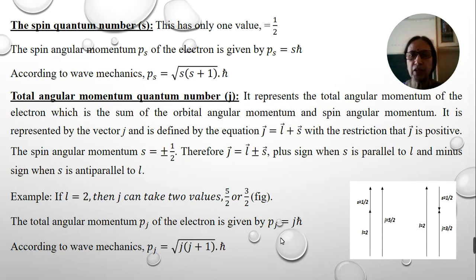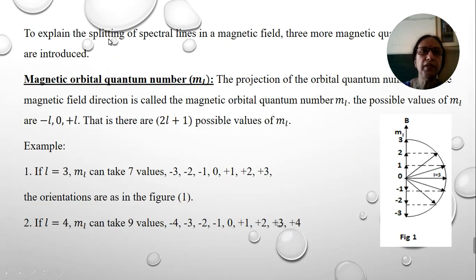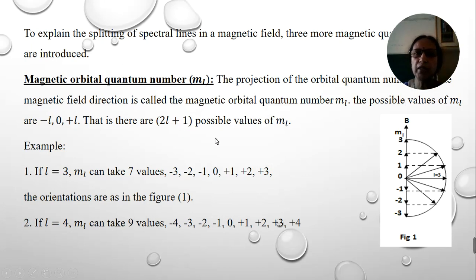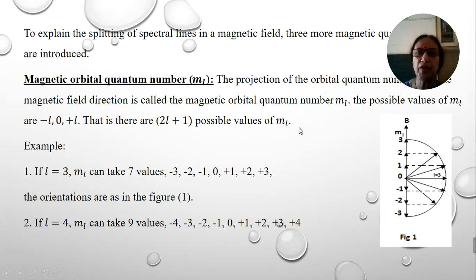In the presence of a magnetic field, the splitting of spectral lines can be understood with the help of three more quantum numbers. The first is the magnetic orbital quantum number, designated M_L. It is defined as the projection of the orbital angular momentum vector along the magnetic field direction. M_L can take values from −L to +L including 0, giving 2L+1 possible values for each value of L.